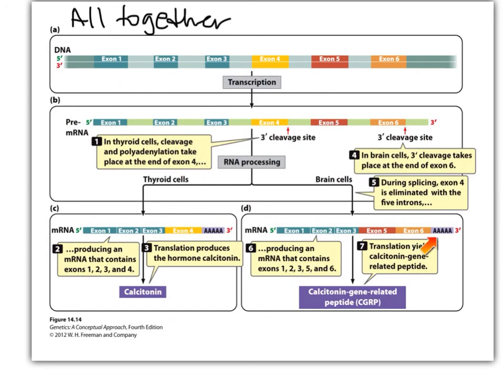Translation in thyroid cells gives the calcitonin hormone. Translation in brain cells gives a different protein missing those amino acids but with extra amino acids — this is calcitonin gene-related peptide. Two different proteins, two different functions. That's all we're going to cover for alternate splicing and 3' cleavage sites. I hope you've enjoyed it — I certainly have. Have a good one!